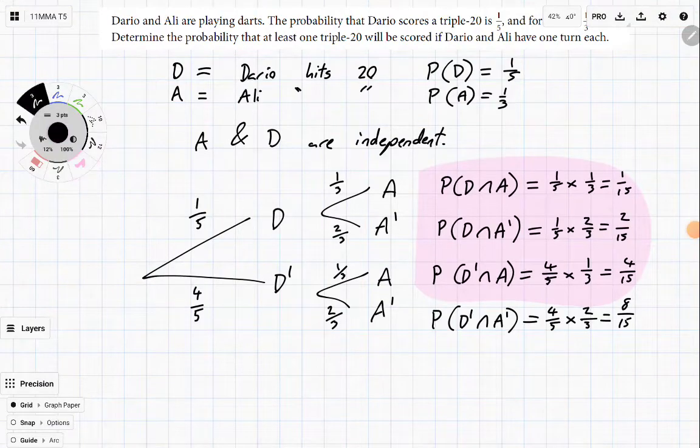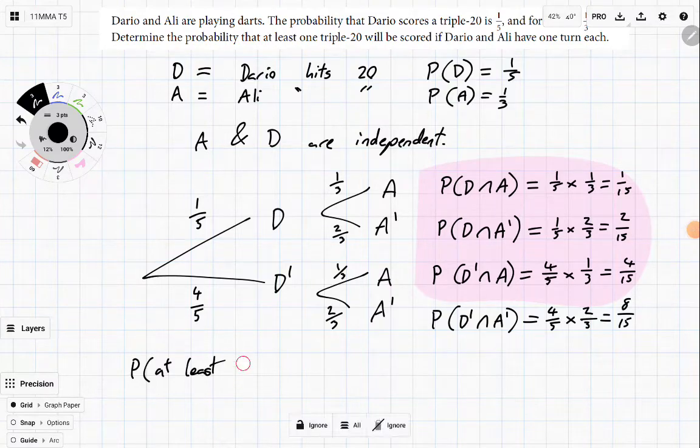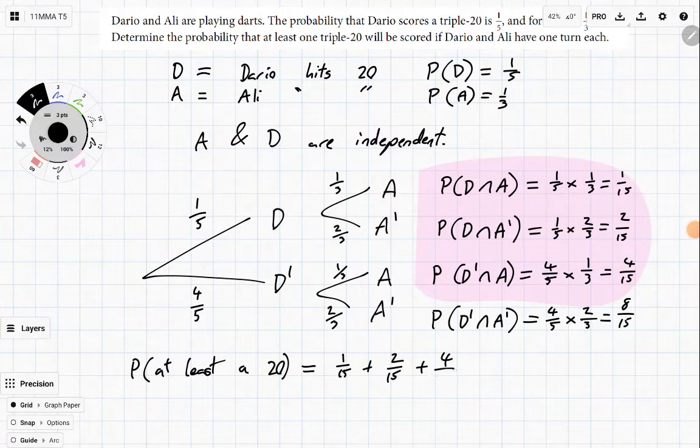So, we're looking for the probability of at least one triple 20. What's it going to be? A fifteenth plus two fifteenths plus four fifteenths, which is seven fifteenths.